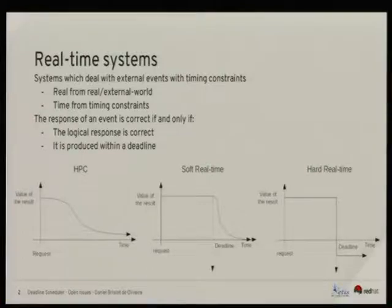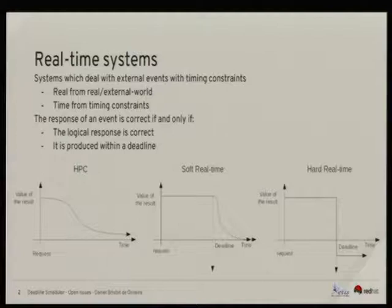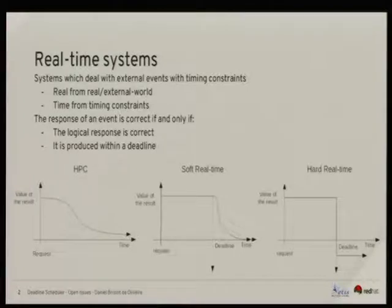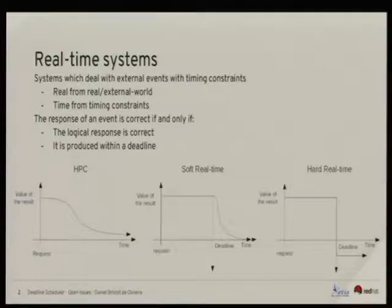So what is a real-time system? Real-time systems are systems that react to events from the external world and must react within a deadline. It sometimes gets confused with high-performance computing, but it's not, because in high-performance computing we don't have deadlines. In real-time we have deadlines. We can sometimes miss a deadline on soft real-time systems but not on hard real-time systems. Linux is a soft real-time system but we try to push as many hard real-time algorithms as possible to improve it.